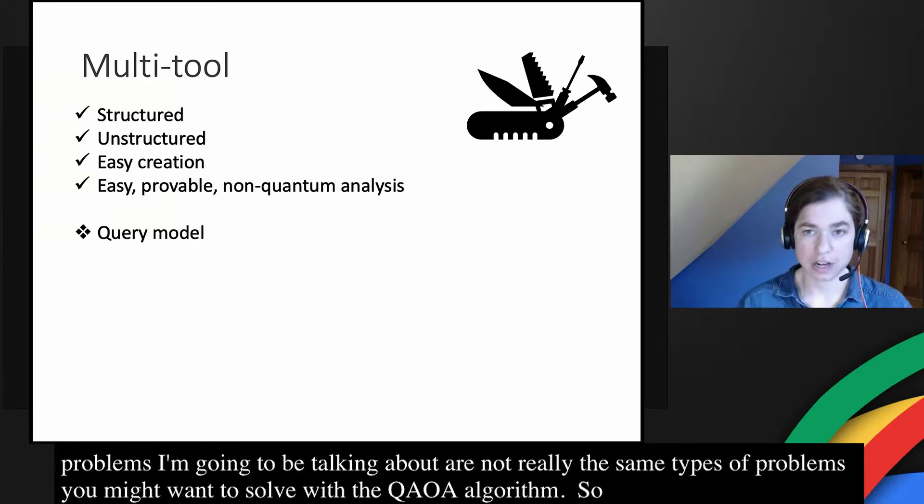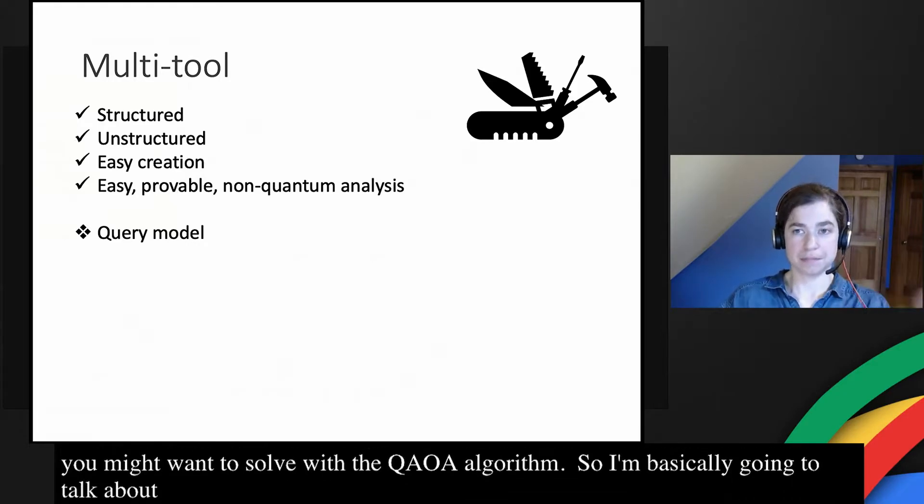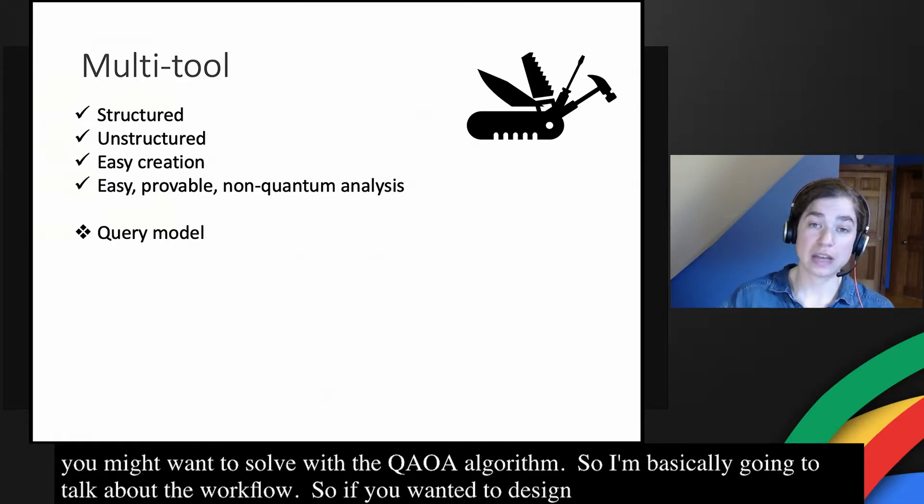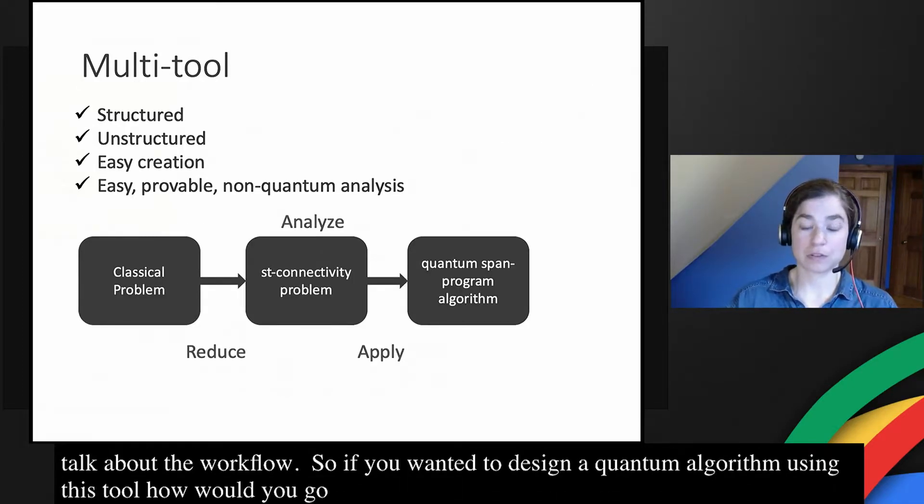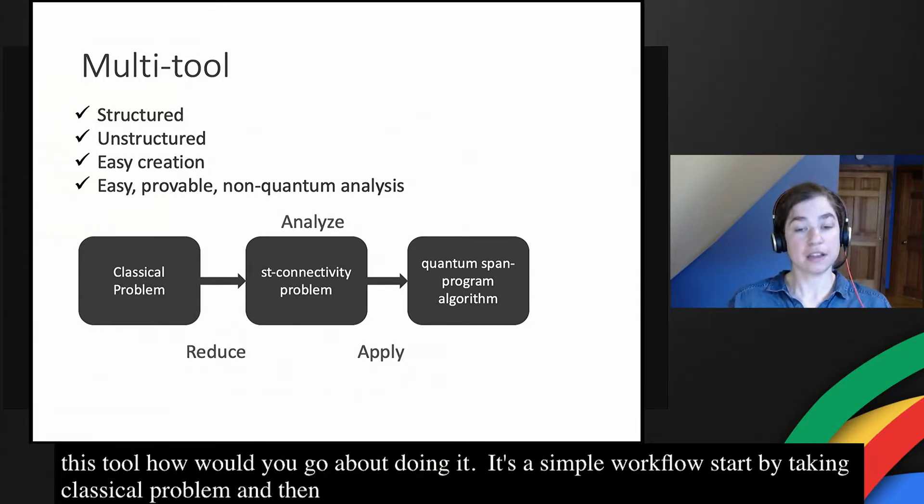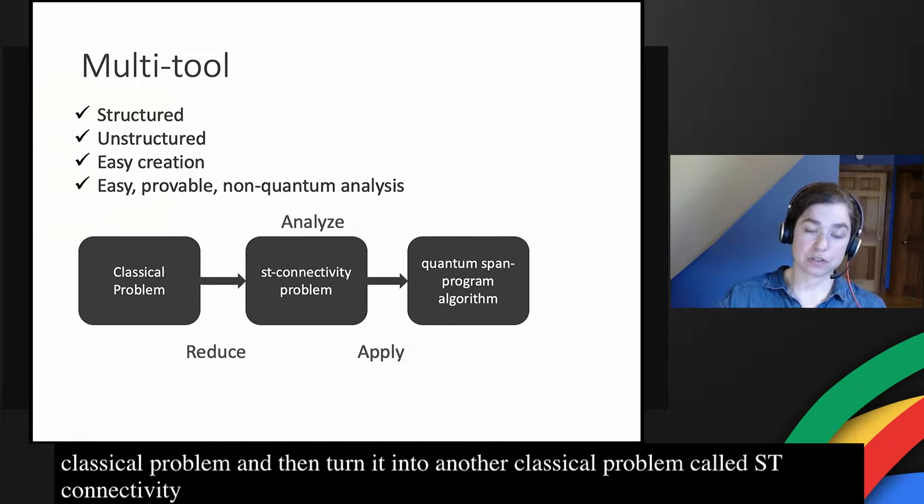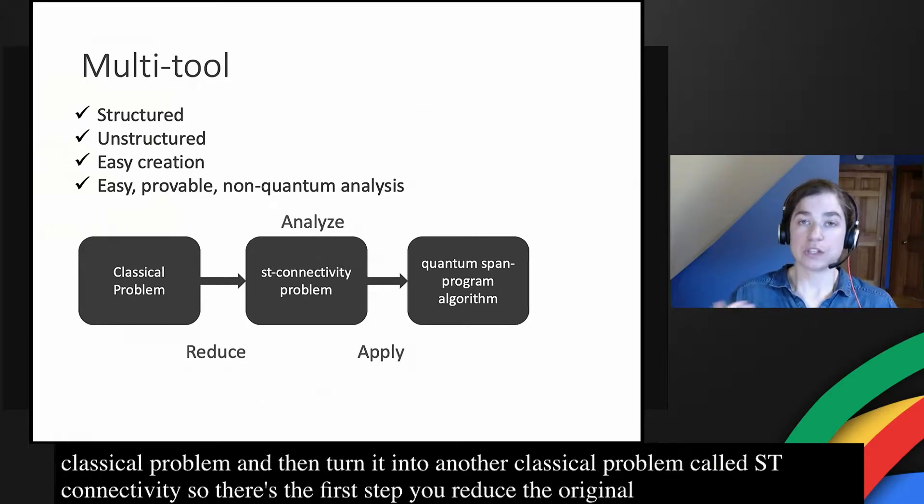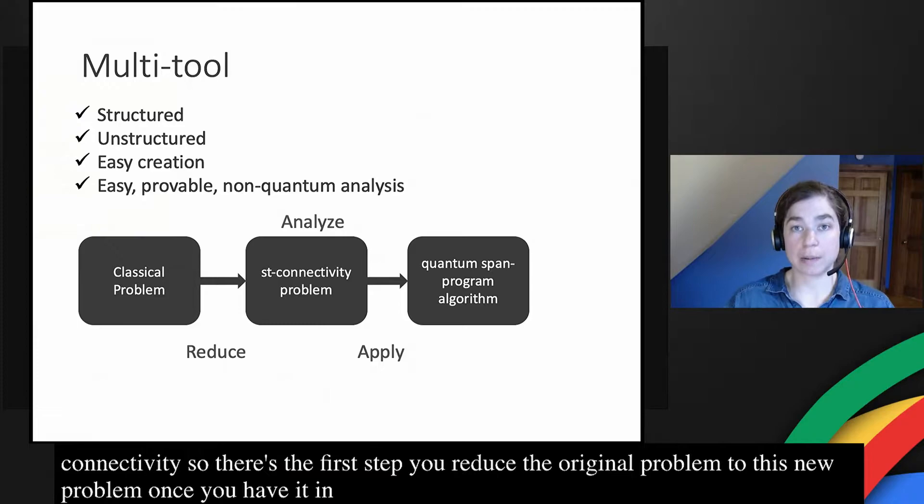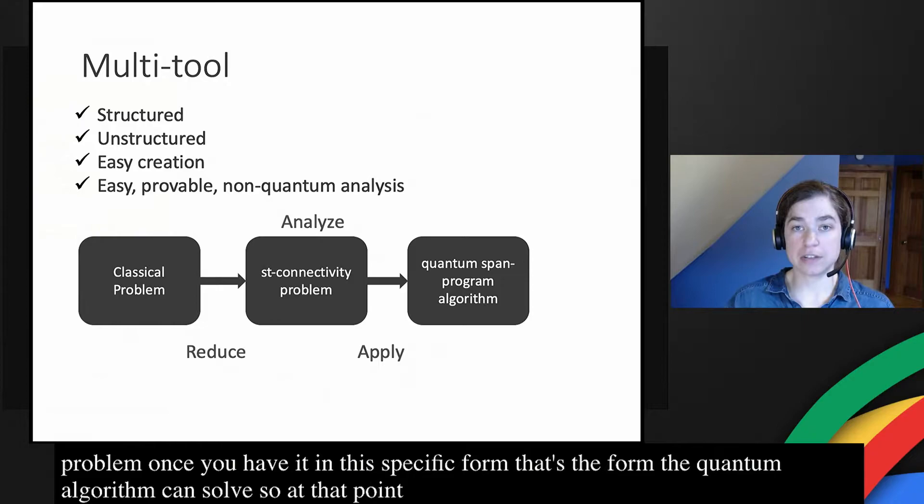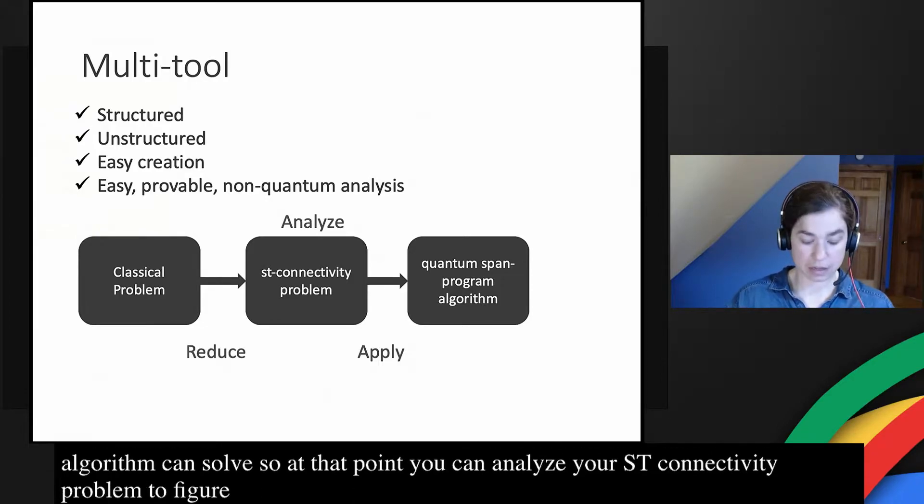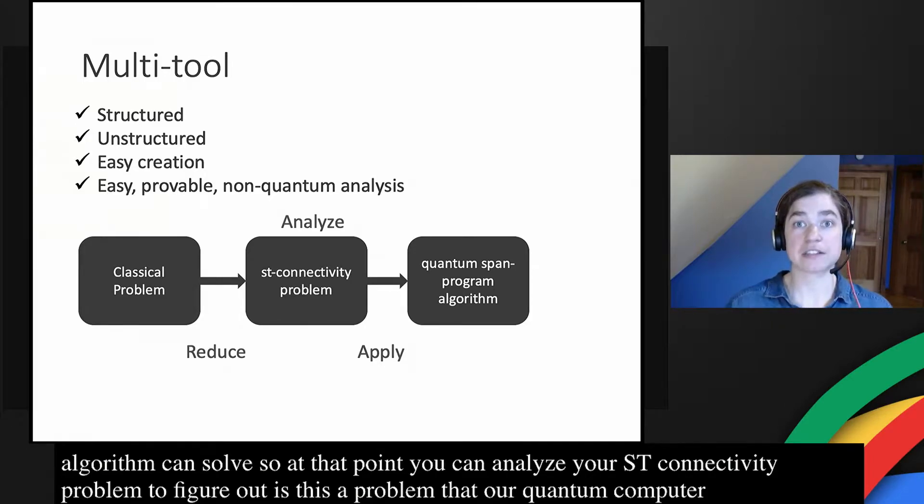I'm basically going to talk about the workflow. If you wanted to design a quantum algorithm using this tool, it's a simple workflow. You start by taking your classical problem, and then you turn it into another classical problem called ST connectivity. So there's the first step where you reduce the original problem you want to solve to this new problem. Once you have it in this specific form, that's the form that the quantum algorithm can solve. And so at that point you can analyze your ST connectivity problem to figure out, is this a problem that our quantum computer could actually solve in a way that is fast enough to make it worth it?